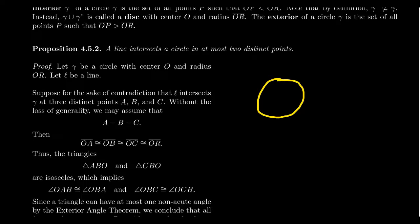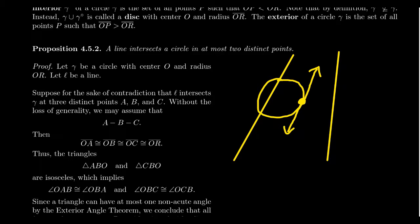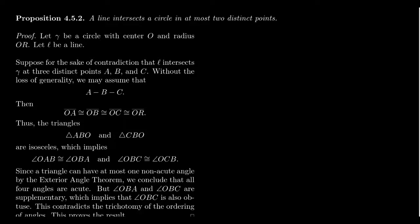So this proposition tells us that if a line intersects a circle, it happens at most at two points. And so that justifies the following type of drawing. If we have a circle, how can we have a line? Well, that line could not intersect the circle whatsoever. Most likely, you're going to get a line that cuts the circle into two different places. But you also have the possibility of a tangent line.